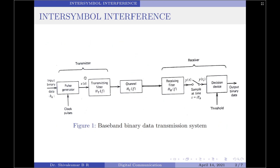Continuing, the pulse amplitude modulated signal X(t) is then passed through a transmitting filter with transfer function H_T(f). The output of the transmitting filter is the signal that will be transmitted through the channel. The channel itself has a transfer characteristic H_C(f), and the transmitted signal may be modified during transmission according to the characteristics of the channel.